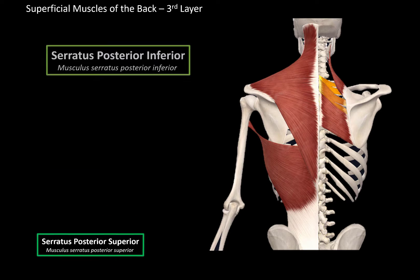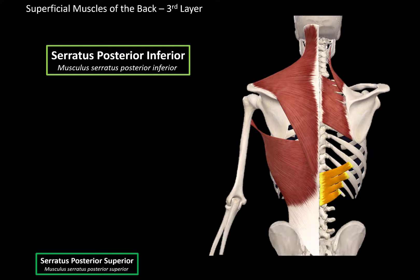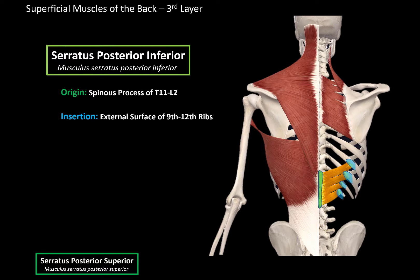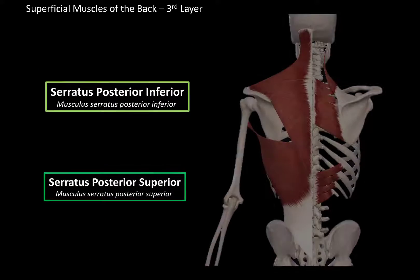The other muscle is the serratus posterior inferior, which is down here. It originates from the spinous processes of T11 to L2, and inserts at the external surface of the ninth to twelfth ribs. Its function is the opposite of the serratus posterior superior — it pulls the ribs down to aid with the process of expiration, basically breathing out. And that was the third layer of the superficial back muscles.